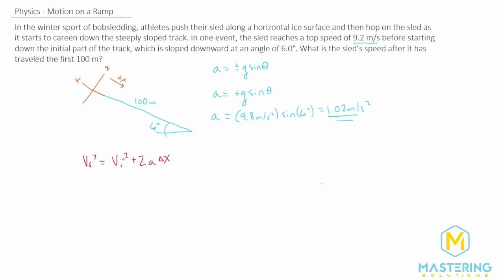In this equation nothing is zero, so we don't need to simplify, but we do need to isolate the final velocity. We'll take the square root of both sides of the equation. So vf equals the square root of vi squared plus 2 times the acceleration times delta x.